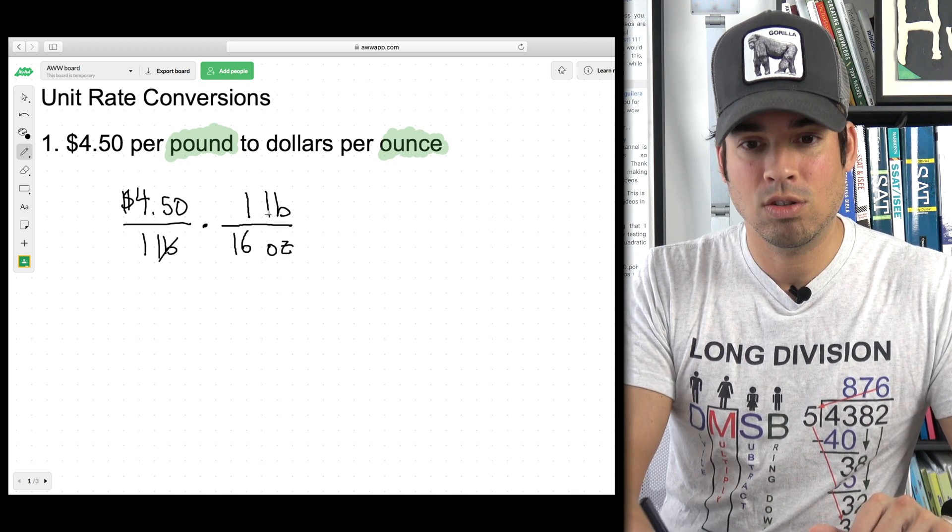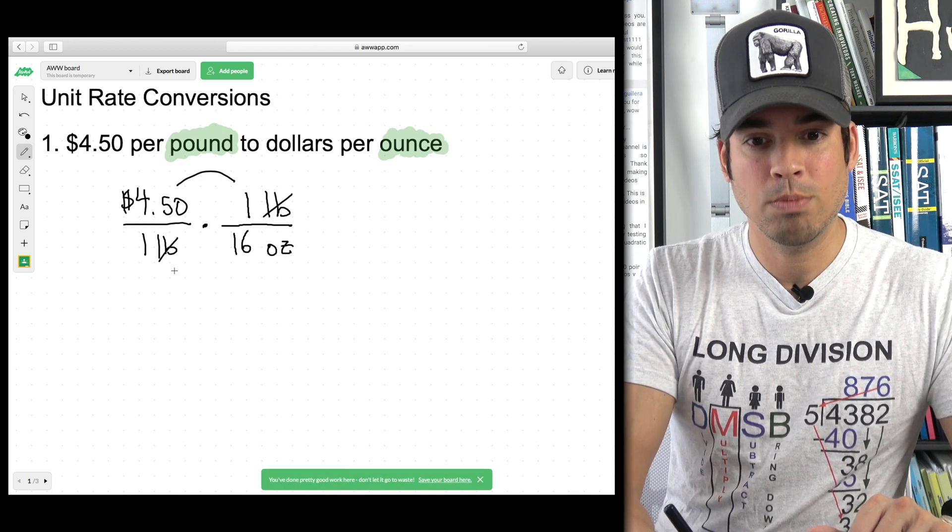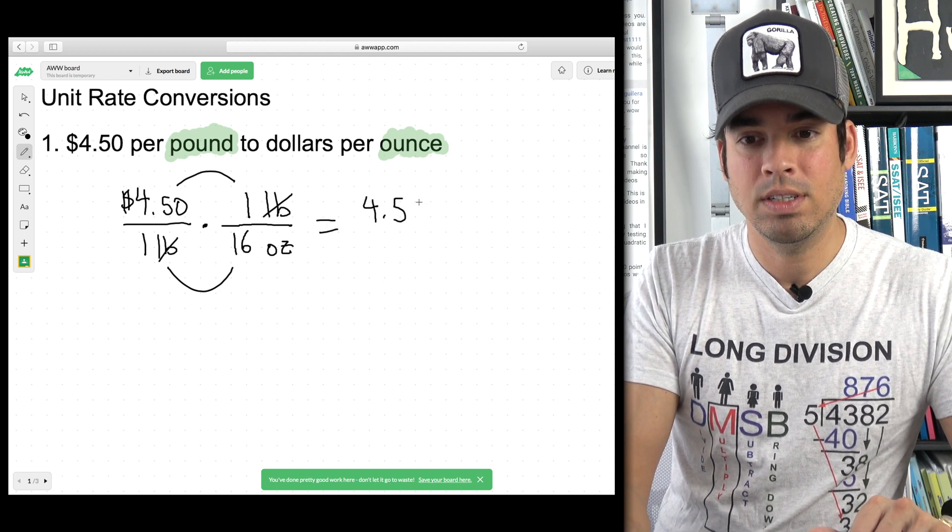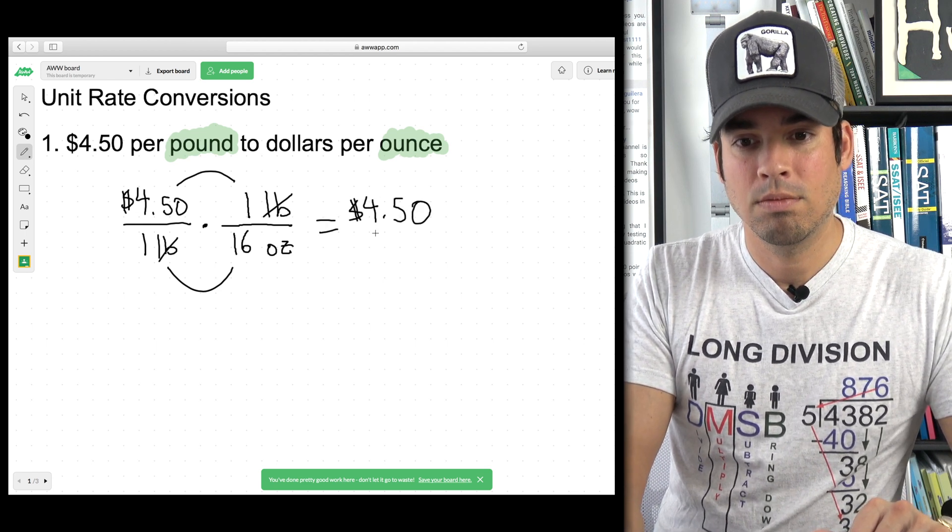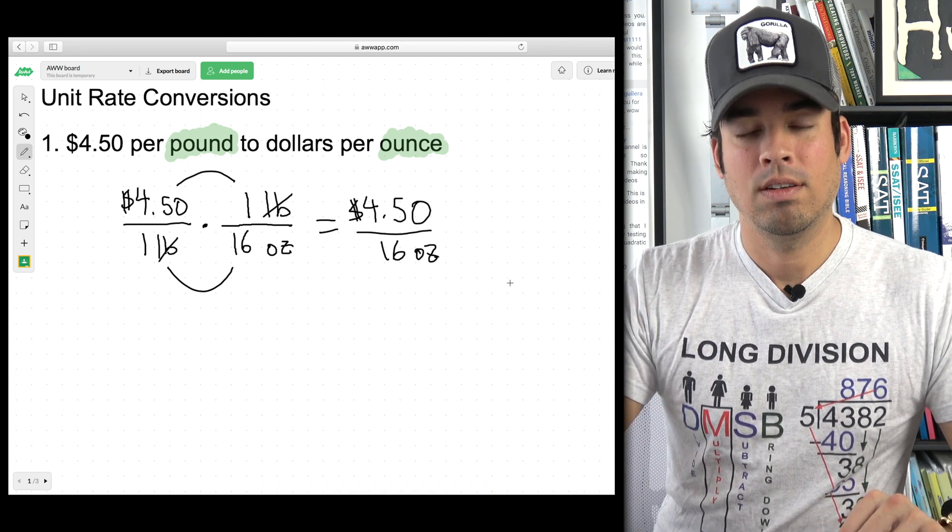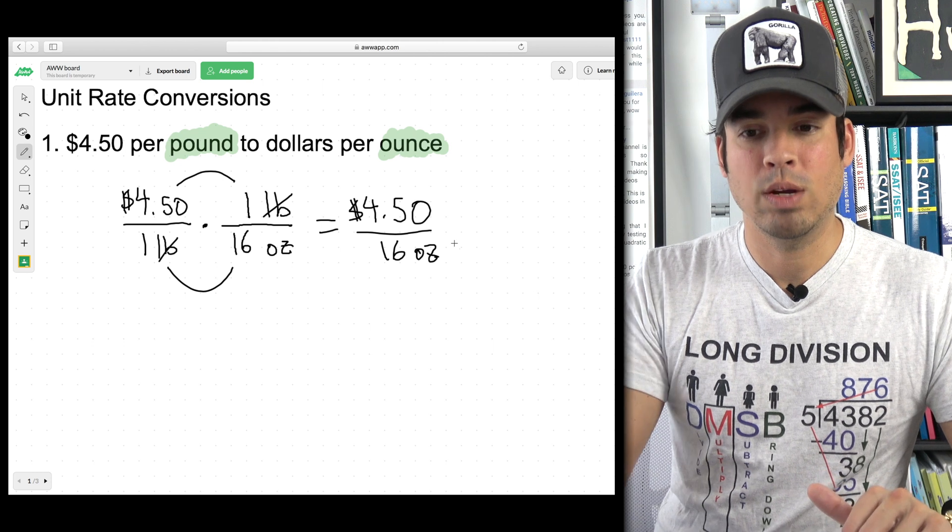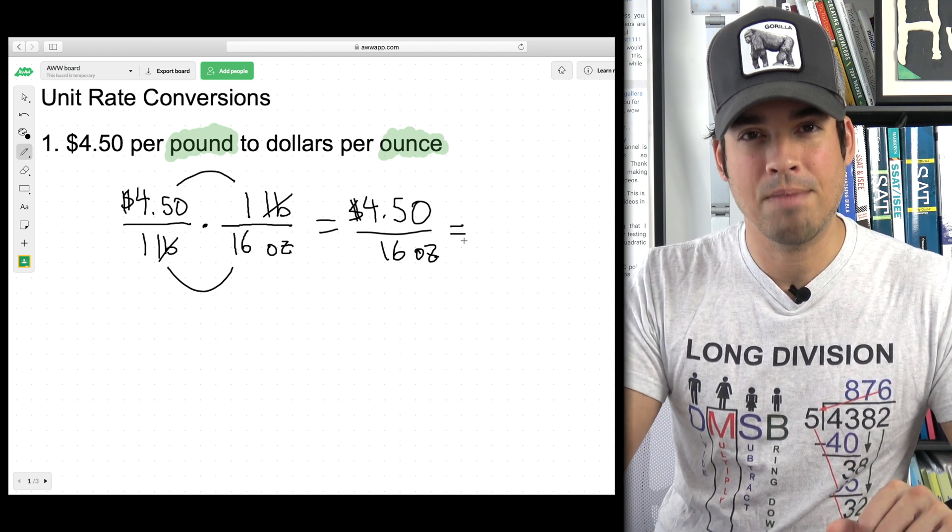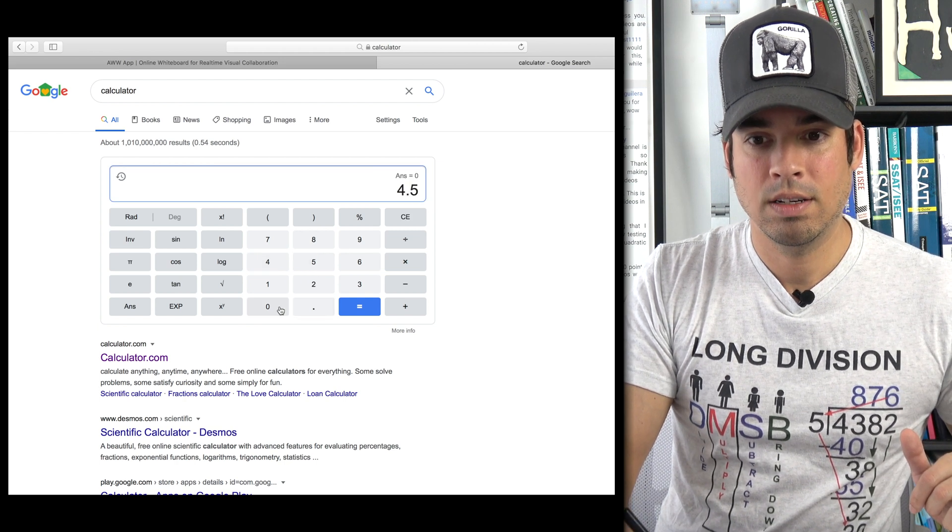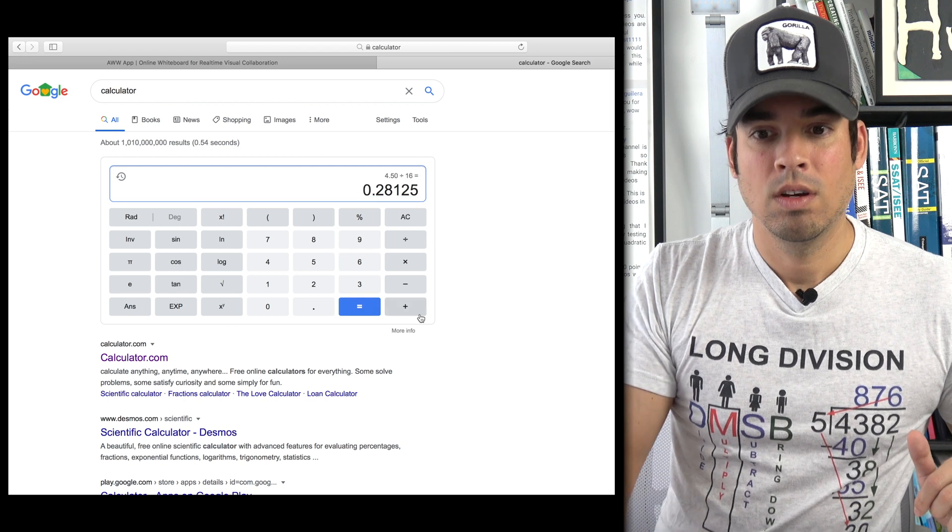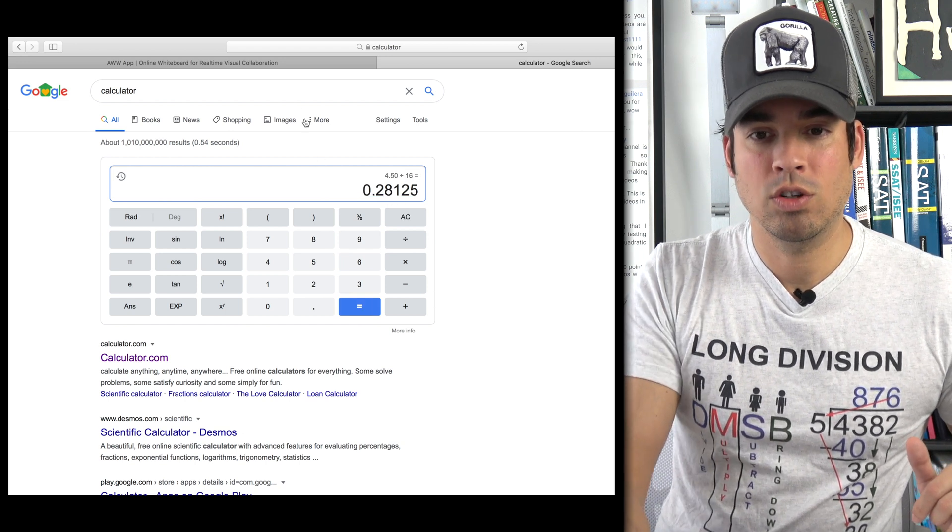Now the units cancel out and then we just multiply across. And I get $4.50 per 16 ounces. Now again if we want to present this as a unit rate we'll go ahead and use a calculator to divide the numerator by the denominator. So we got 450 divided by 16 and we get 0.28125.